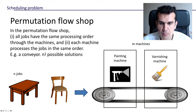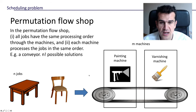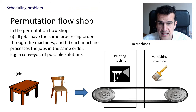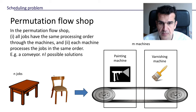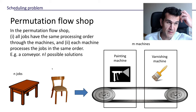So how many possible solutions has the permutation flow shop? Well, basically the only thing we have to decide is in which order we're gonna sort the jobs initially, because that order is going to be kept all throughout the machines. And therefore, with N jobs, there are N factorial different ways in which we can sort them. So the number of possible solutions for the permutation flow shop is N factorial.